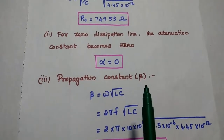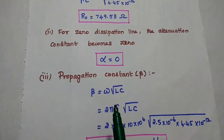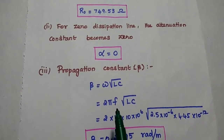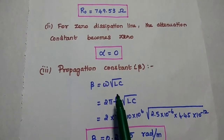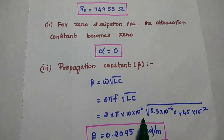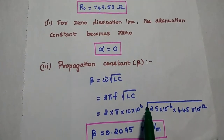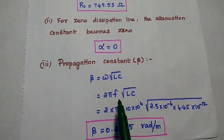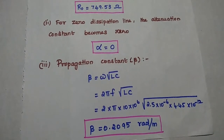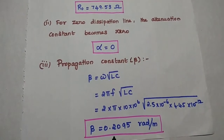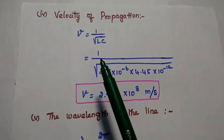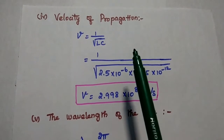Next is the propagation constant beta. Beta is equal to omega into the square root of LC. Omega can be written as 2 pi F. The F value is 10 MHz, that is 10 into 10 to the power plus 6. Substituting the values of F, L, and C, we get beta equal to 0.2095 radians per meter.